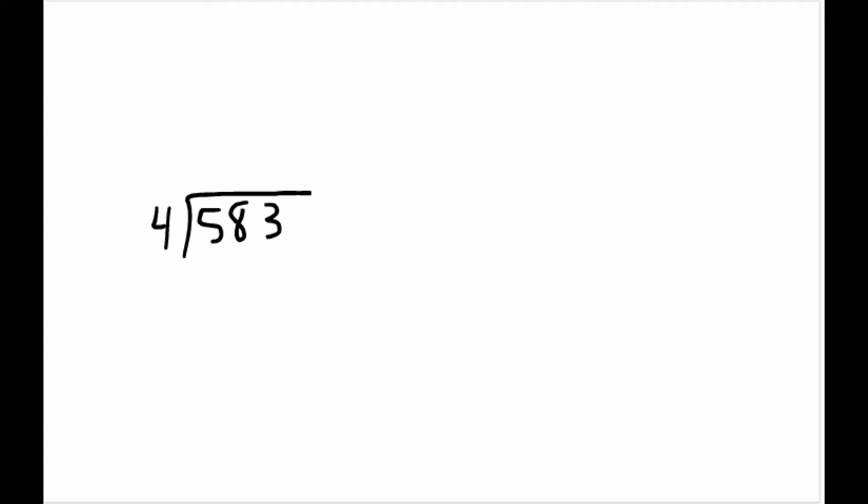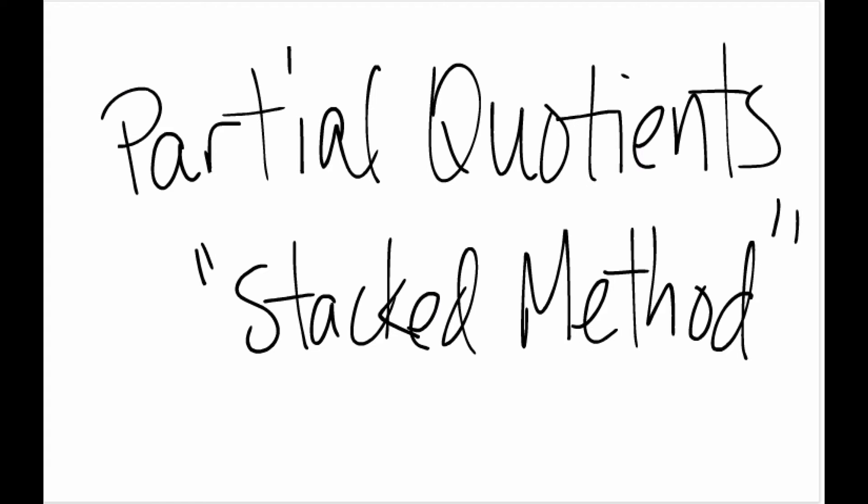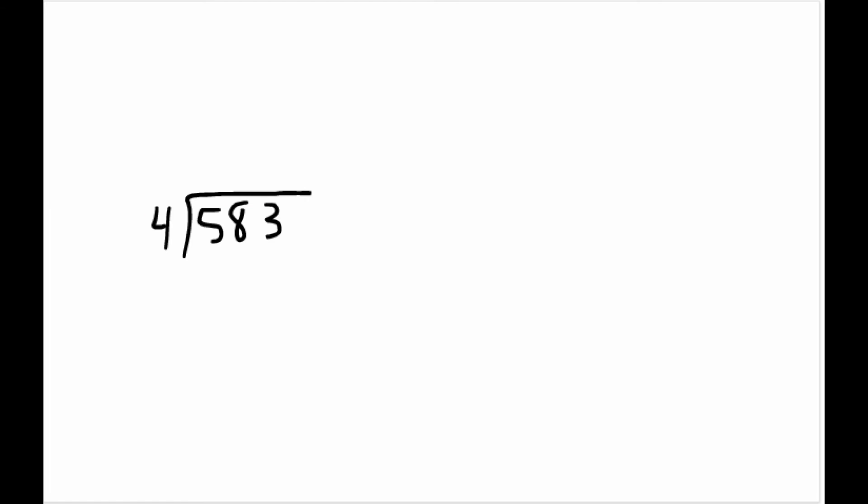In this video we're going to show you how to do 583 divided by 4, and I'm going to use a method that I call the partial quotients stacked method. It's very similar to the classic partial quotients technique where we keep a running tally down the side. The only difference is instead of keeping it down the side, we stack our partial quotients going up the top.